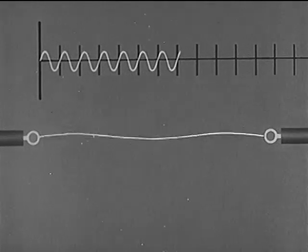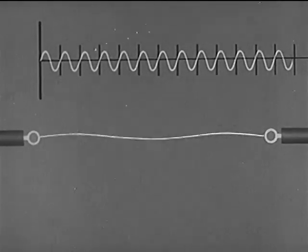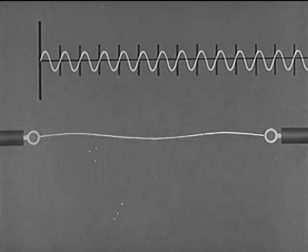When the string vibrates in three segments, it produces its second overtone, the third partial. Here, the frequency is three times that of the fundamental.